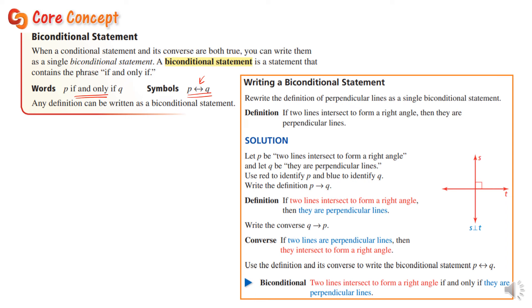Here's an example: rewrite the definition of perpendicular lines as a single biconditional statement. The definition is: if two lines intersect to form a right angle, then they are perpendicular lines. The converse is: if two lines are perpendicular, then they intersect to form a right angle. Since both are true, we can write the biconditional: two lines intersect to form a right angle if and only if they are perpendicular.